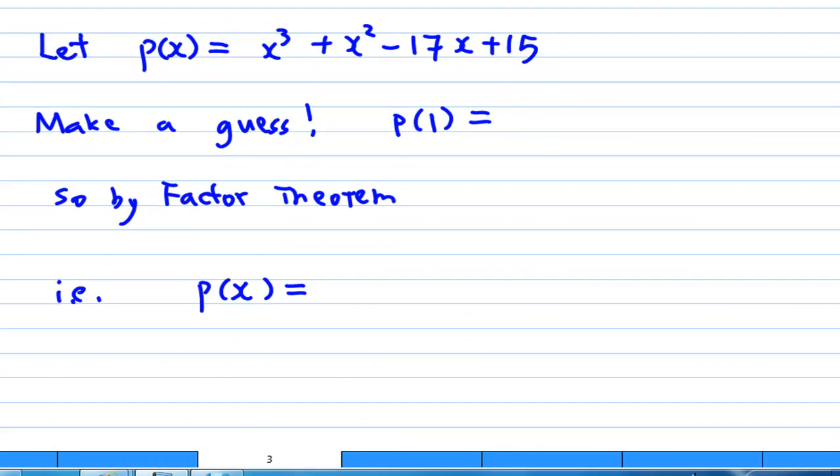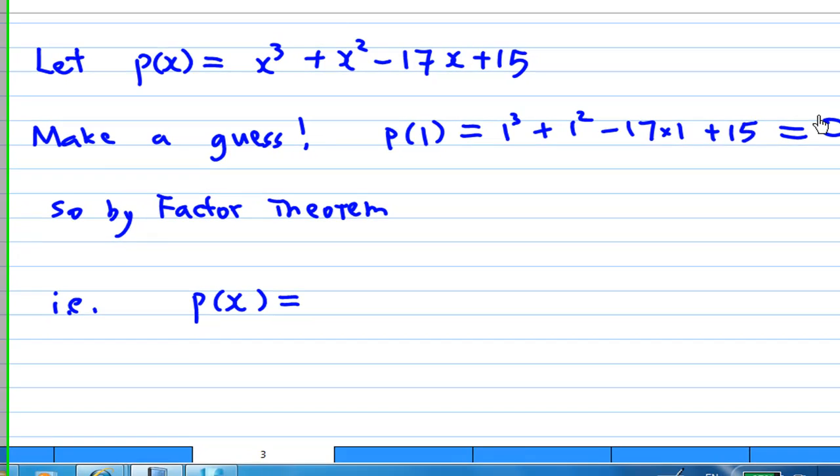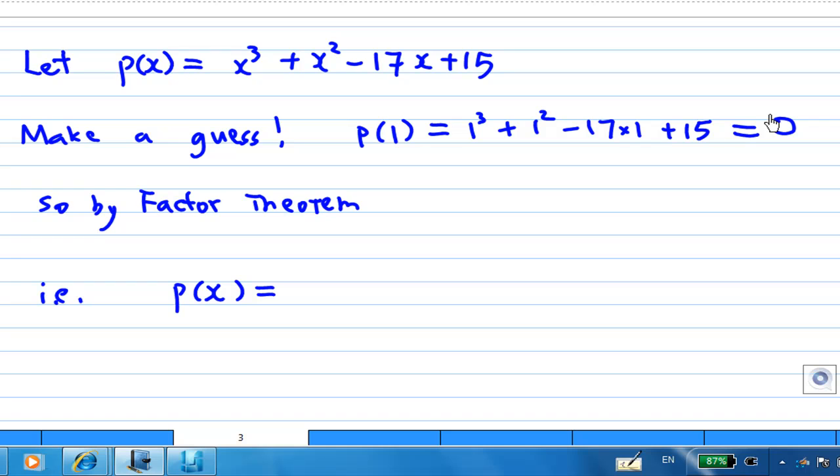How to apply this? Let p(x) equal x cubed plus x squared minus 17x plus 15. I just make a guess. Let's say p(1). This is equal to 1 cubed plus 1 squared minus 17 times 1 plus 15, and this ends up equal to 0. So you put x equal to 1, you get p(1) equals 0.